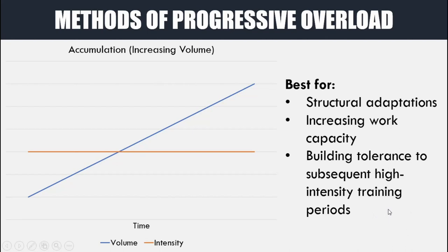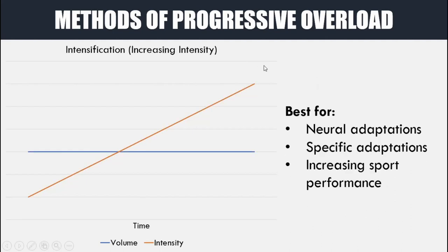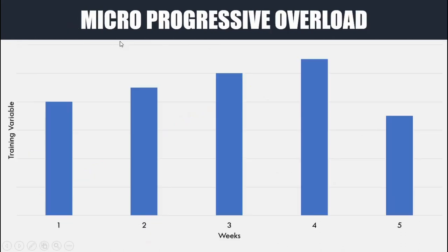By doing enough accumulation work, when we go through high intensity training periods or games we will have the tolerance to recover from that stress appropriately without getting injured. The second method is intensification — increasing intensity — which looks essentially the opposite: intensity increases while volume remains the same or could potentially increase a little bit. This method of progressive overload is best for neural adaptations, so if we're in a strength, power, or speed sport we want those neural adaptations to recruit and utilize muscle fibers appropriately. Specific sport adaptations happen best during this time, and we are likely to increase sport performance more through an intensification progression.